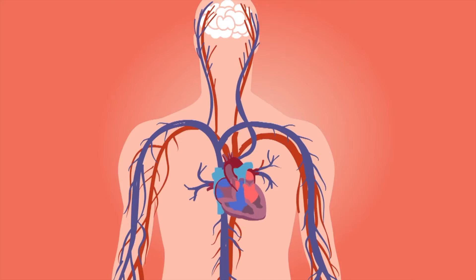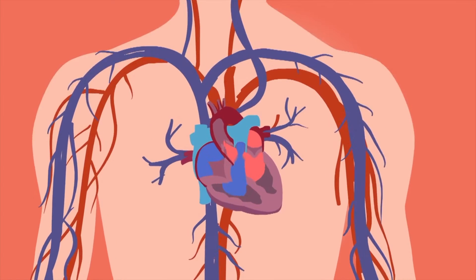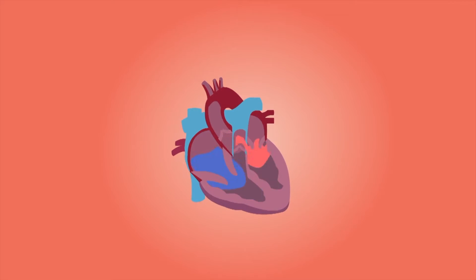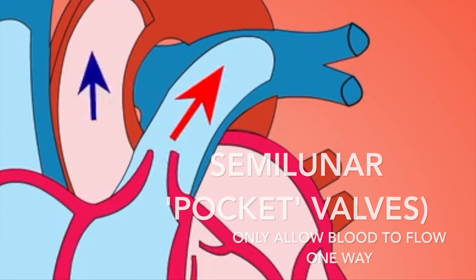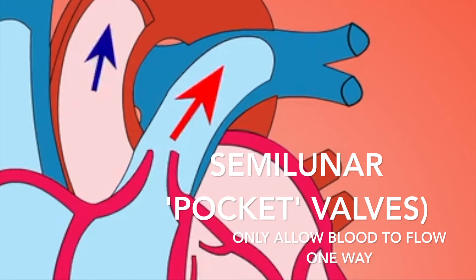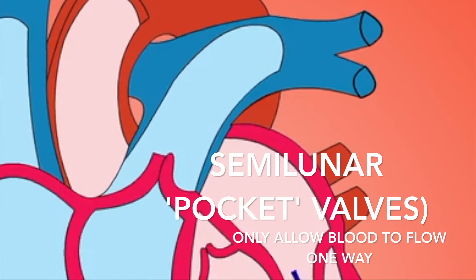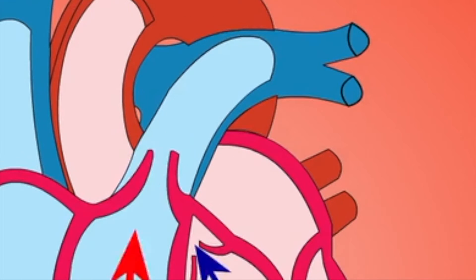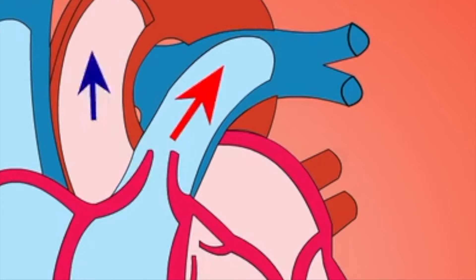Contractions of the ventricles have a tendency to force these valves up into the atria. The backflow of blood would be dangerous, so the chordae tendinae hold each valve firmly to prevent this from occurring. Semilunar, or pocket valves, are found in the blood vessels leaving the heart. They only allow exit of blood from the heart through these vessels following ventricular contractions. Elastic recoil of these arteries and relaxation of the ventricles closes each semilunar valve.